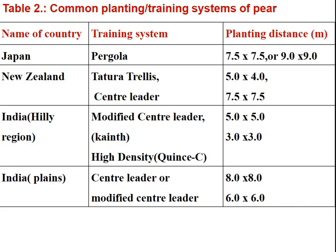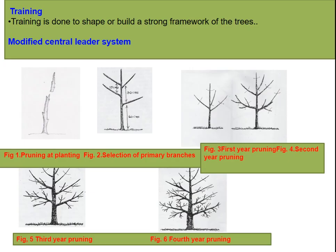Common planting and training systems of pear in India: in hilly regions, the Modified Central Leader system of training is adopted. High-density systems of cultivation are also used, requiring Quince C rootstock. In plains, Central Leader or Modified Central Leader system of training is used. Training is done to shape and build a strong framework of the trees.